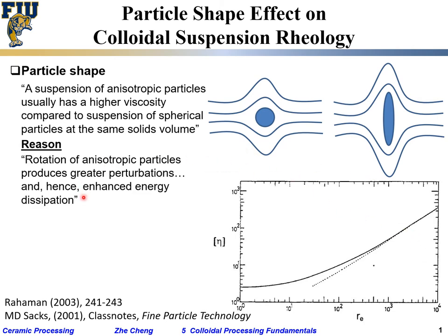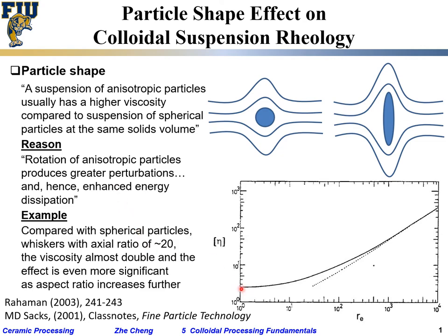We can only give a hand-waving reason: rotation of an anisotropic particle takes energy and produces greater perturbation. This means you have to apply a larger shear stress to overcome it and force it to change direction in order to flow. Compared with isotropic particles, something like a high-aspect-ratio particle would have viscosity almost double or even increasing further.